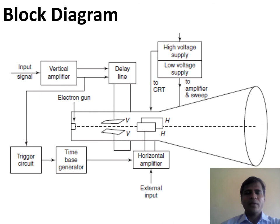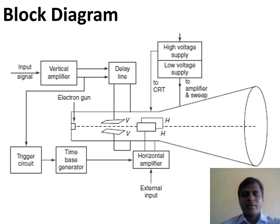Here we have the block diagram of the cathode ray oscilloscope. This block diagram has many blocks like the vertical amplifier, trigger circuit, time base generator, delay line, horizontal amplifier, high voltage supply, and low voltage supply. And the most important of all is the cathode ray tube, which is also called the heart of the CRO.